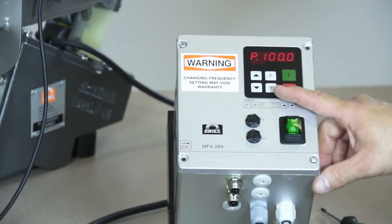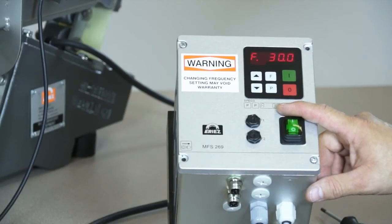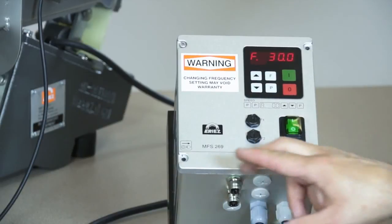Next is F, the output frequency. This value must remain at the frequency of the feeder. In this case, 30 Hz. Changing this value may void the warranty.